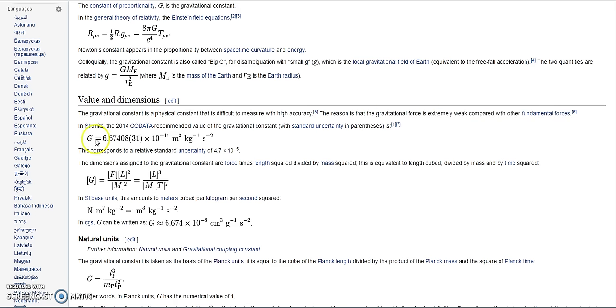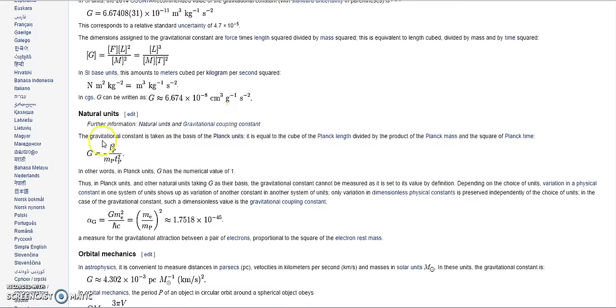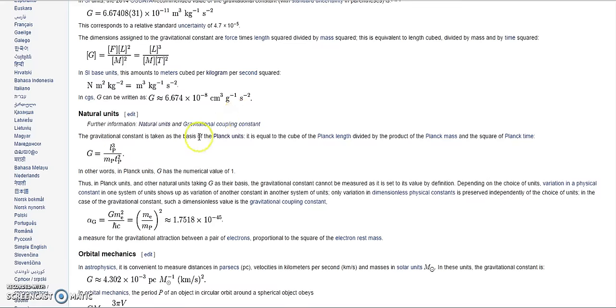And so here's another equation here which looks very advanced, and I'm sure it would scare most of us off. But when we look into it, it says the gravitational constant is taken at the basis of the Planck units. It is equal to the cube of the Planck lengths divided by the product of the Planck mass and the square of Planck time. Here goes the equation. In other words, in Planck units, G has a numerical value of 1. Thus, in Planck units and other natural units taking G as their basis, the gravitational constant cannot be measured as it is set to its value by definition.